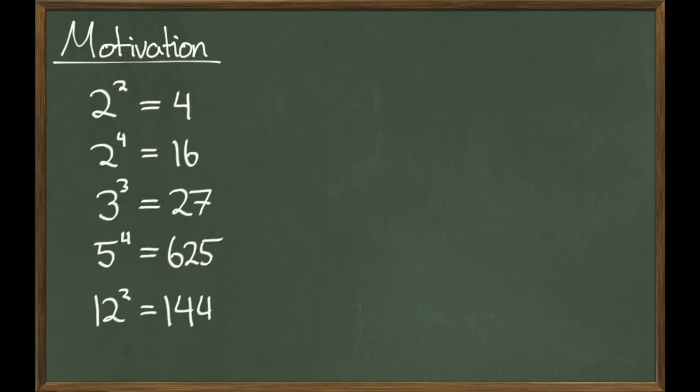So the question is, can we reverse this kind of process? In other words, can I take a bigger number to a power and get a smaller number in return? We know we can write 2 as 2 to the first power, because taking anything to the power of 1 just gives you the same number in return.